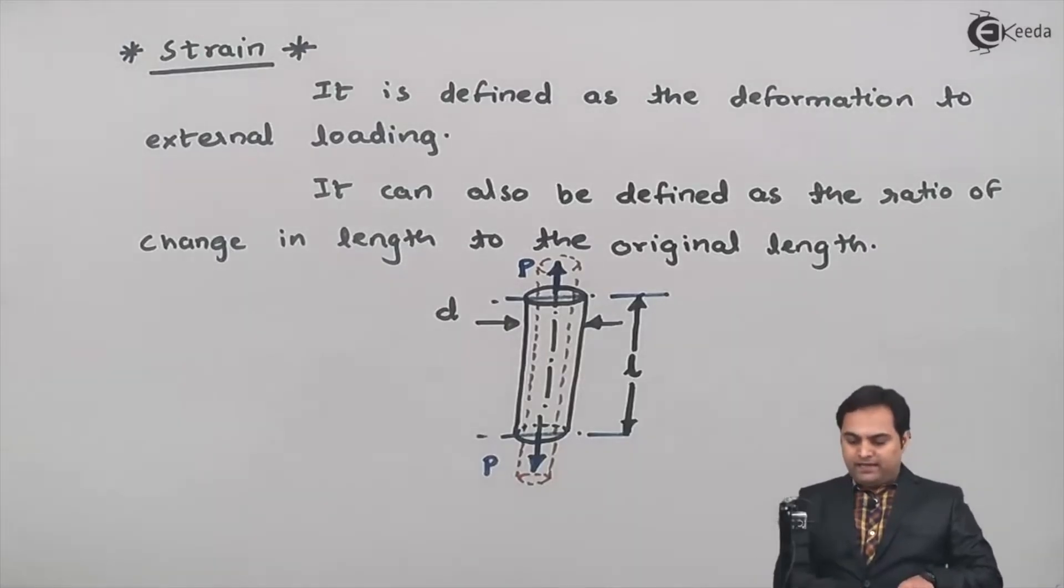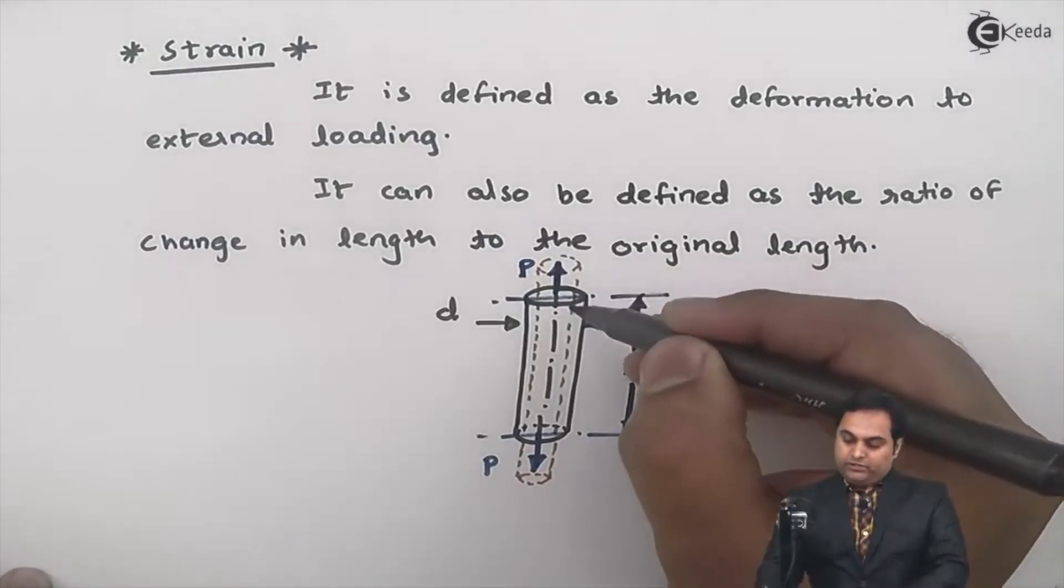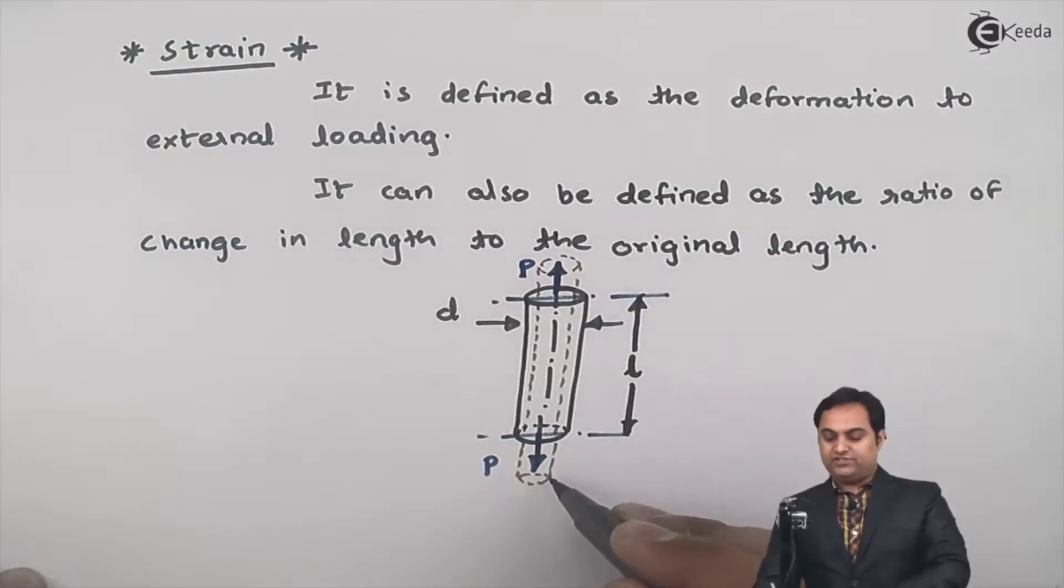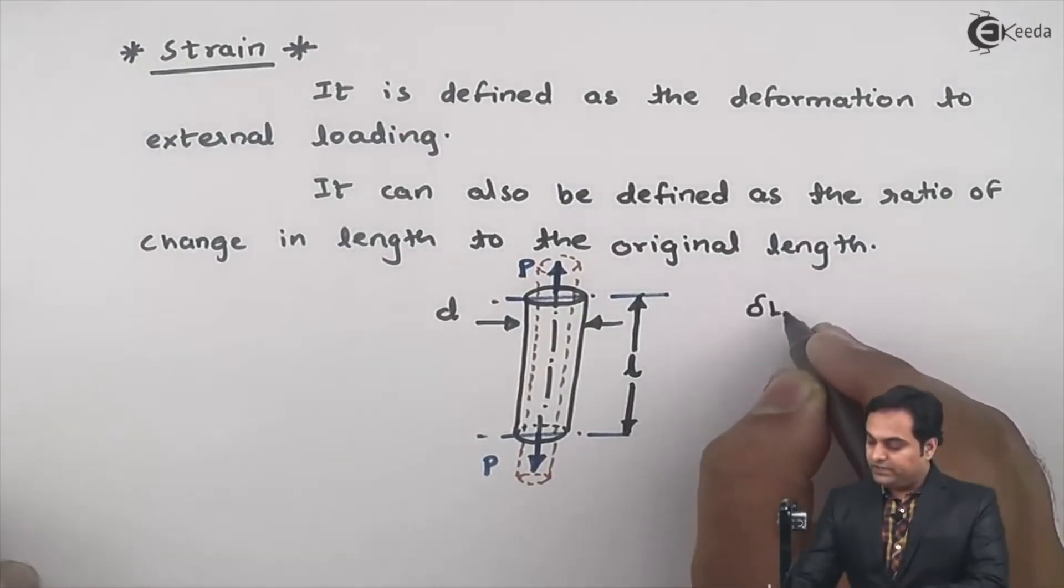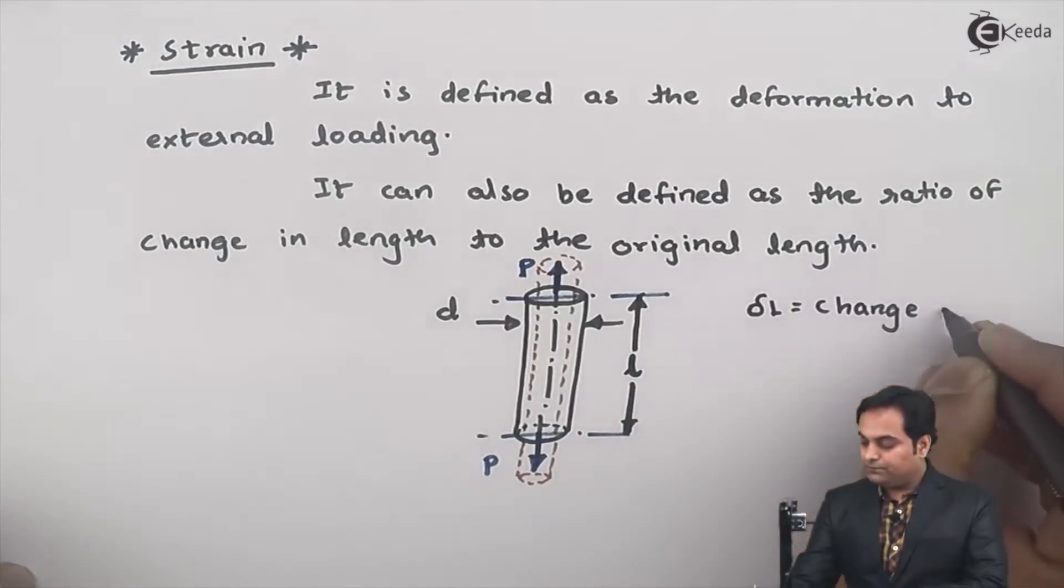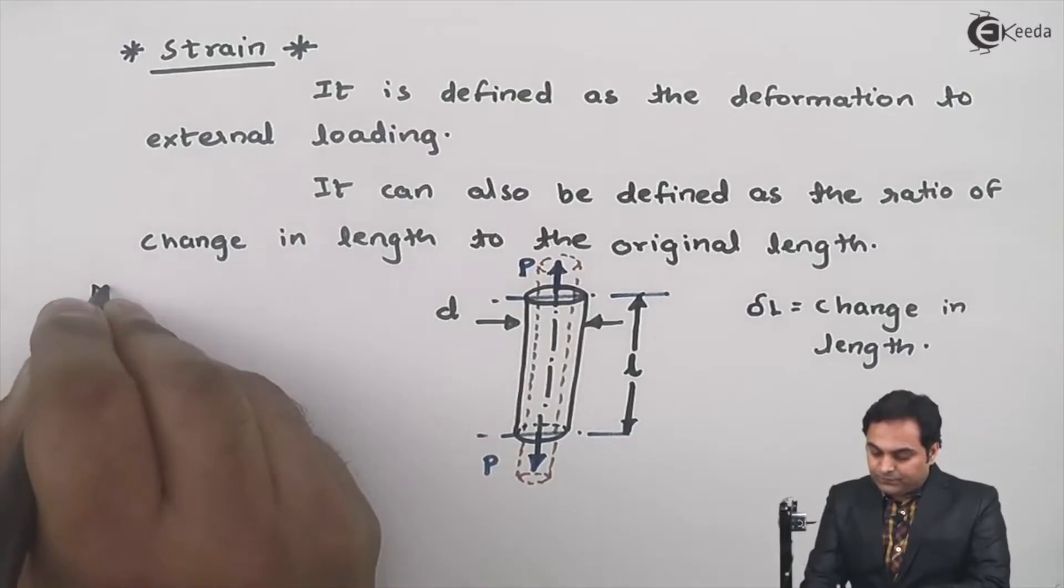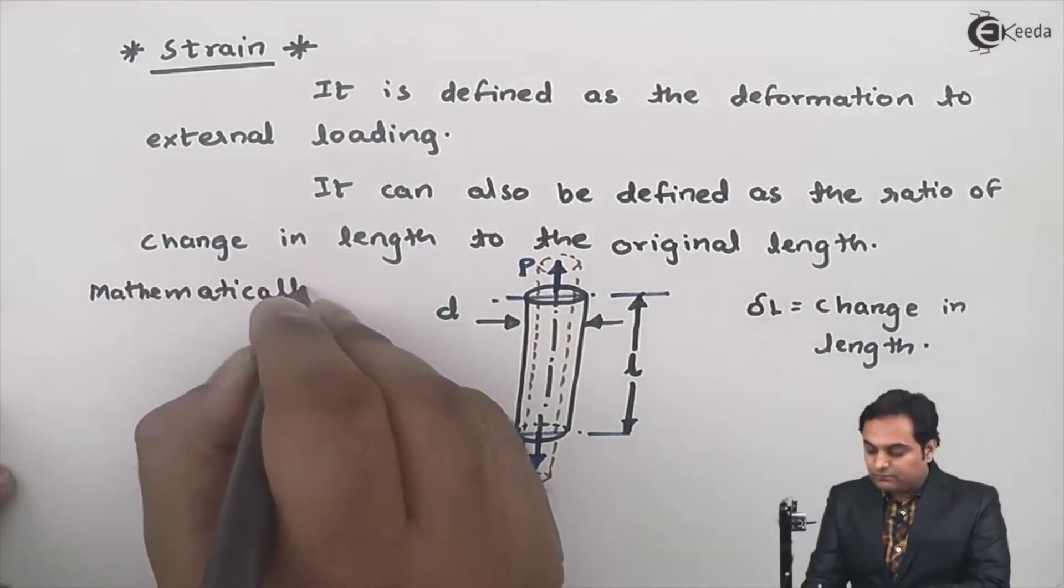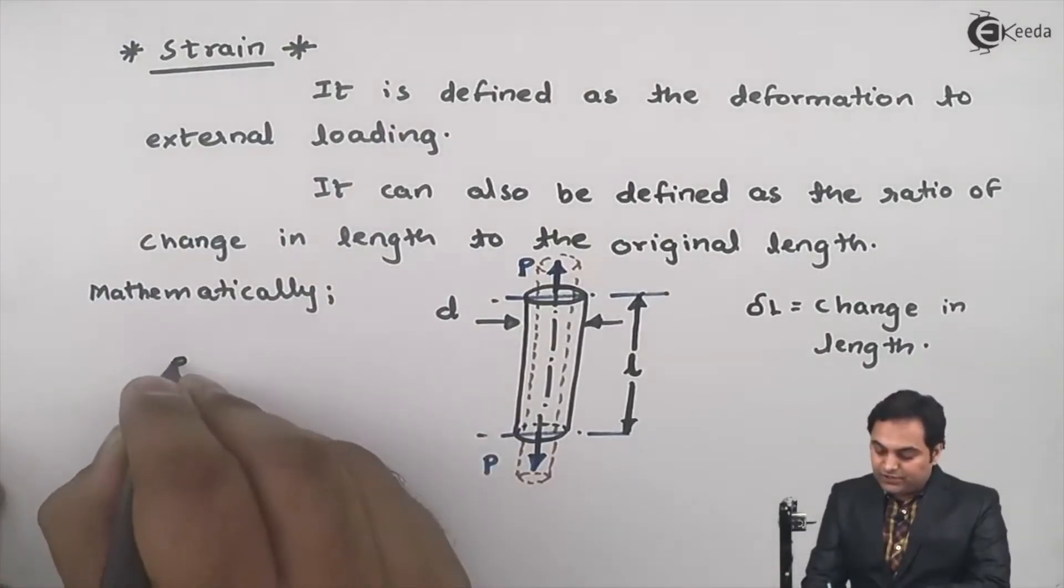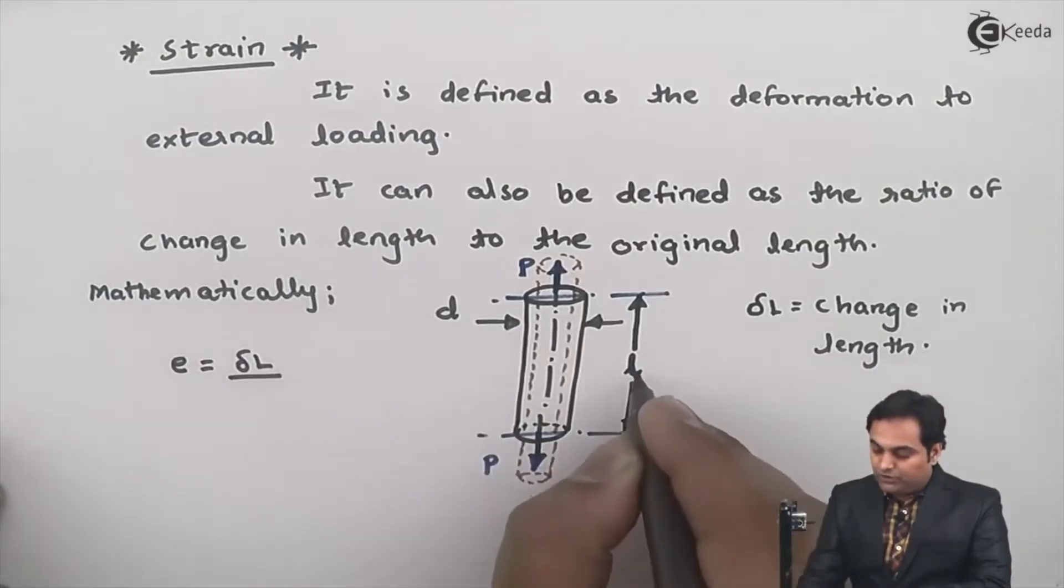So this physical deformation which we see in an object, that is called strain. Here it can also be defined as a ratio of change in length to original length. The length of this rod which is changed would be denoted by delta L, where delta L equals change in length. Mathematically, the formula of strain is: strain equals change in length upon the original length.